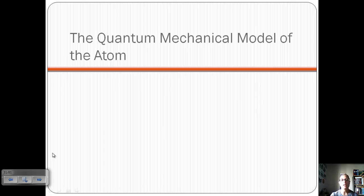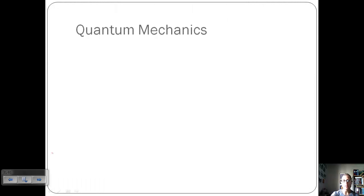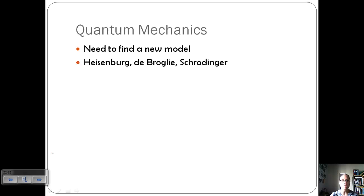Today we're going to continue with our discussion of atomic structure and periodicity and look at the quantum mechanical model of the atom. We talked about Bohr's model and how it only worked for hydrogen but not for other elements, so we need to find a new model.